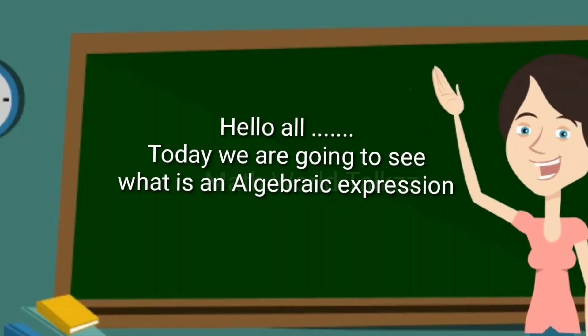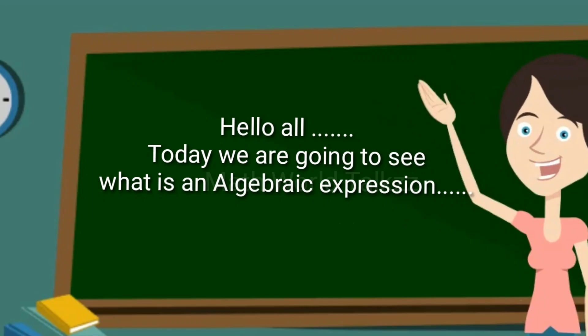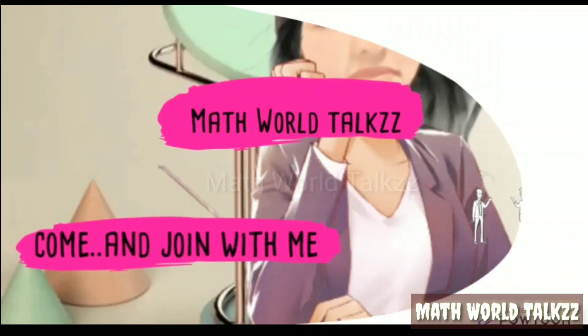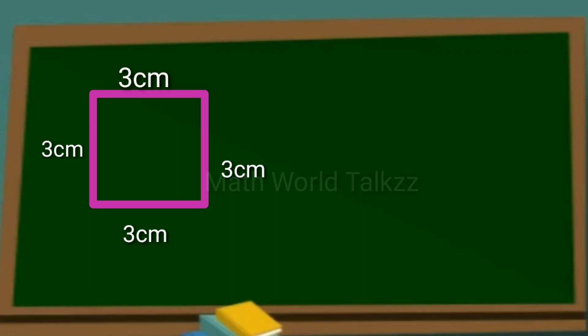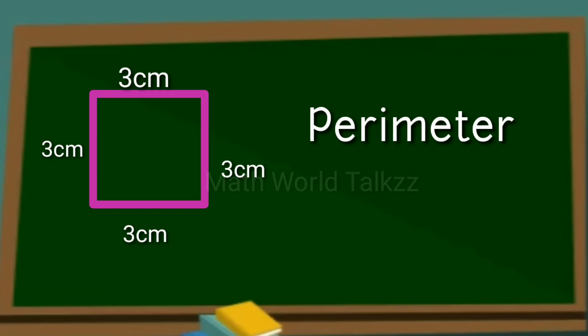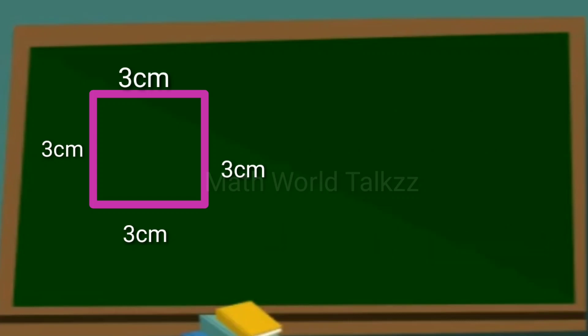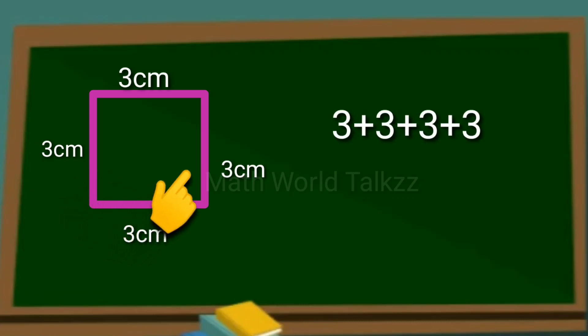Hello all, today we are going to see what is an algebraic expression. Here is a square having size 3 centimeters. Can you tell me the perimeter of the square? What do we mean by perimeter? The perimeter of a figure is the sum of the lengths of all its sides. So here, the perimeter is 3 plus 3 plus 3 plus 3, or we can do 4 into 3.